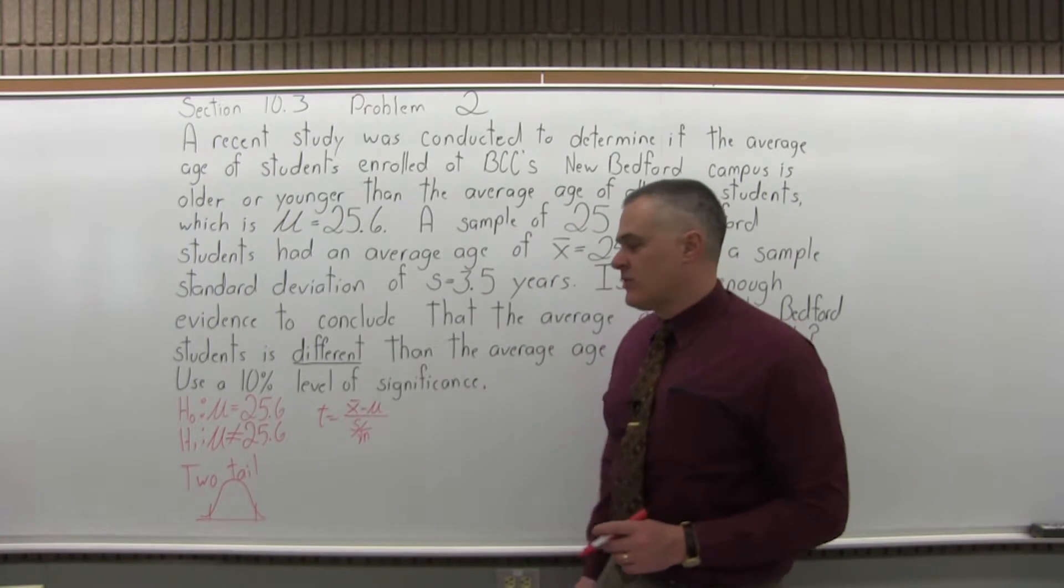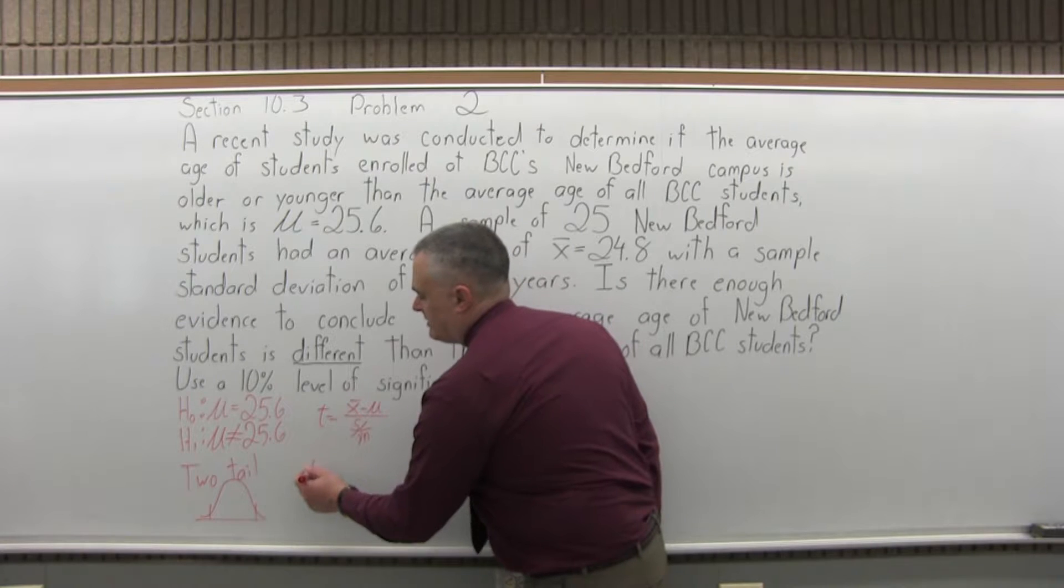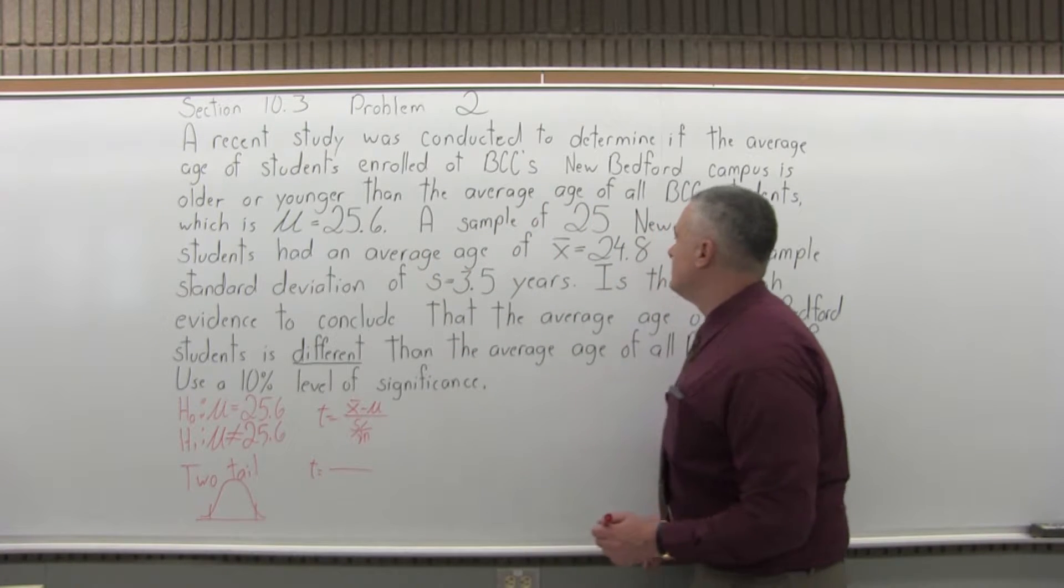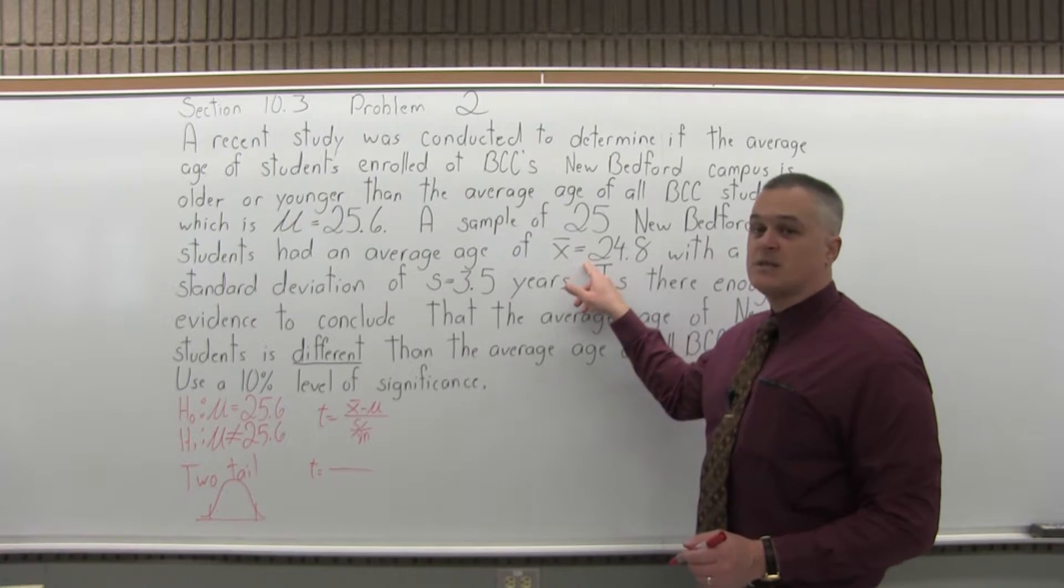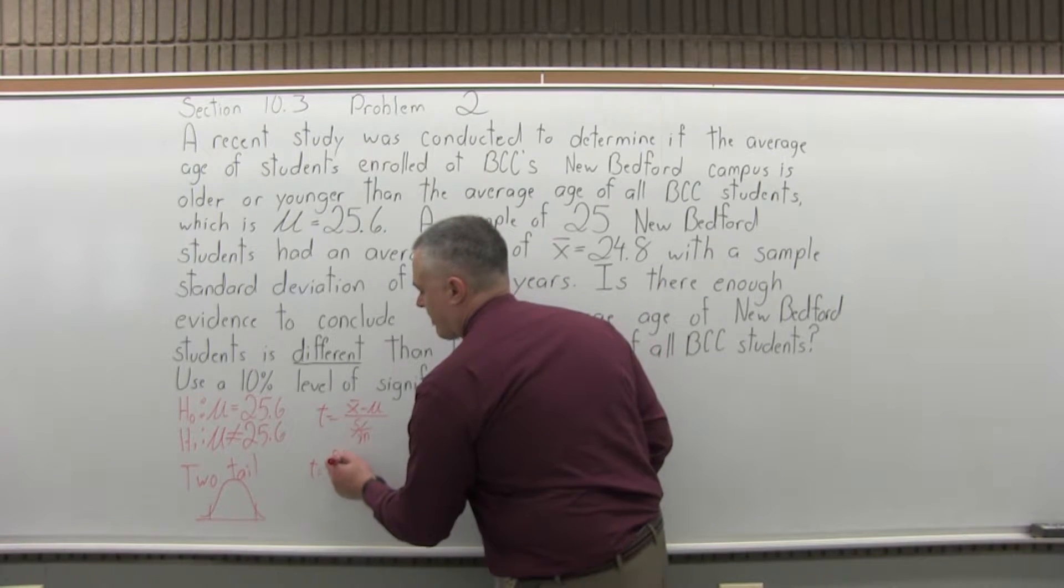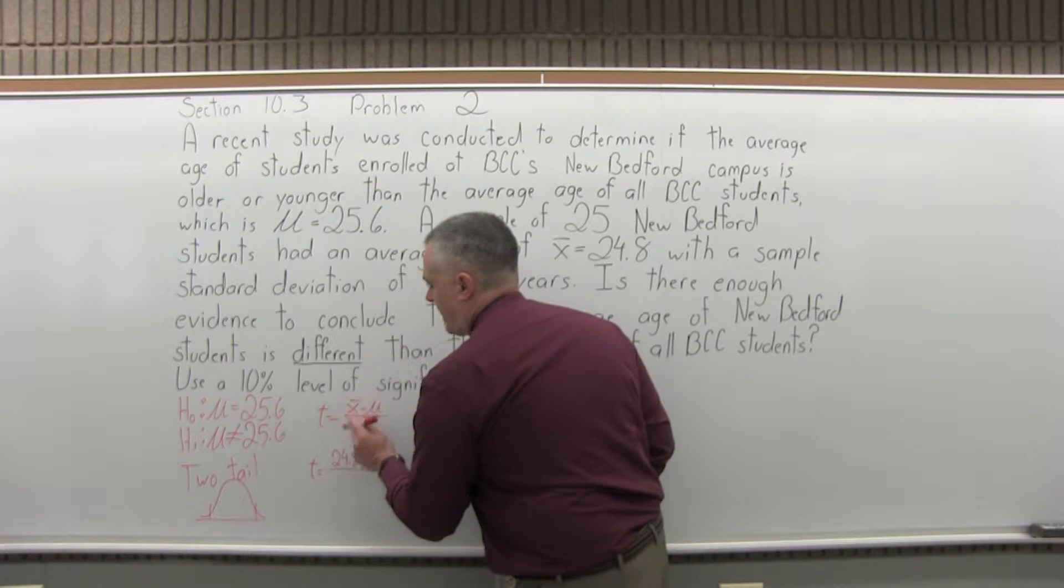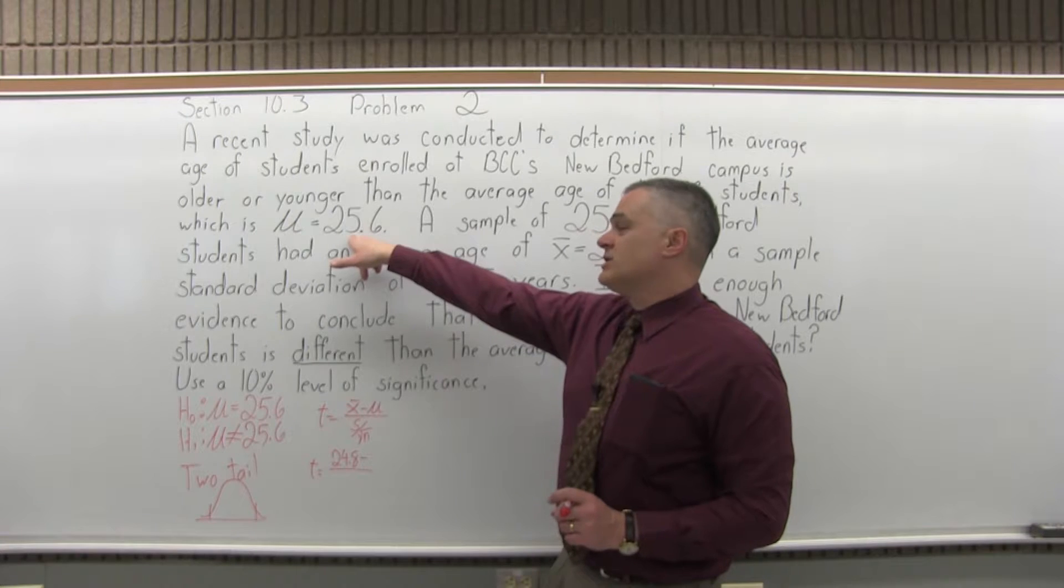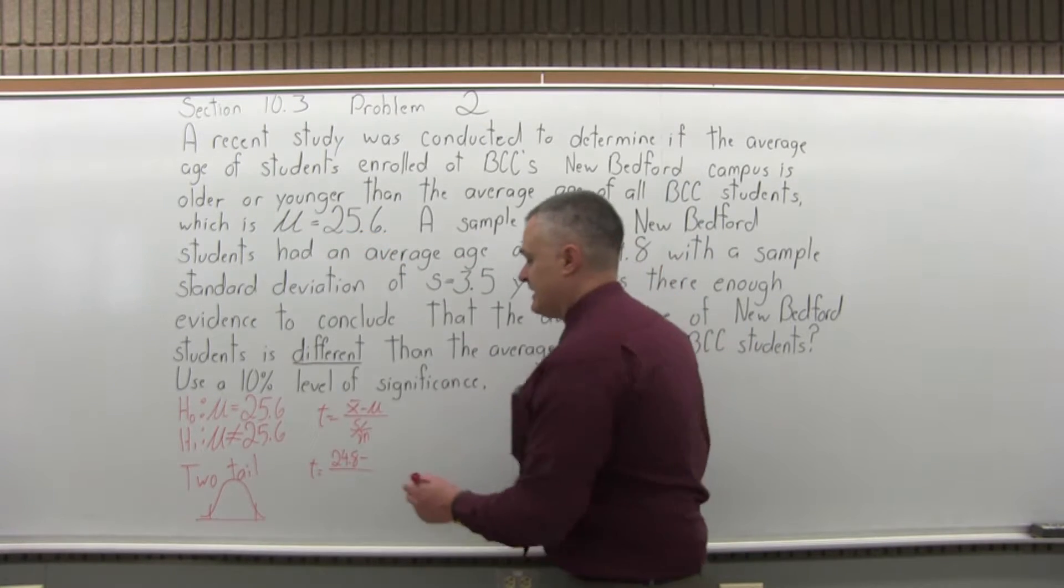t equals x̄, the sample mean, so x̄ is given as 24.8 minus μ, μ the population mean is 25.6, divided by s, the sample standard deviation is 3.5.